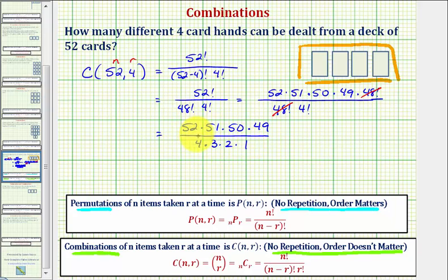Fifty-two and four share a common factor of four. There's one four in four, and thirteen fours in fifty-two. Fifty-one and three share a common factor of three. There's one three in three, and seventeen threes in fifty-one. And two in fifty share a common factor of two. There's one two in two, and twenty-five twos in fifty. So we're left with thirteen times seventeen times twenty-five times forty-nine.